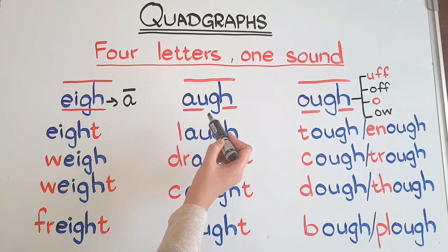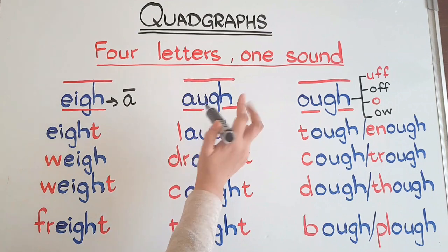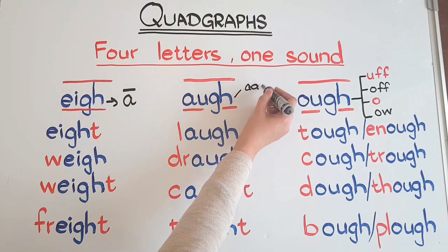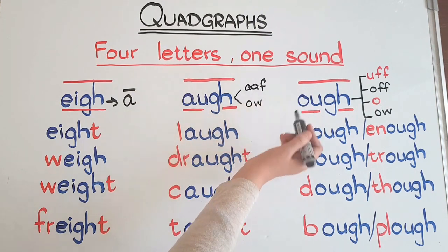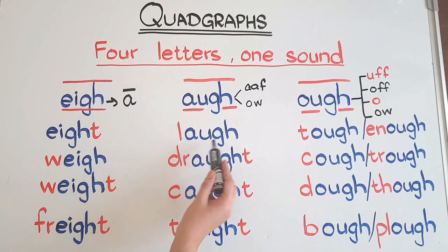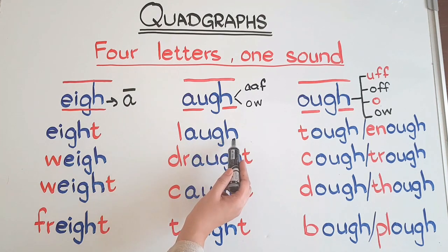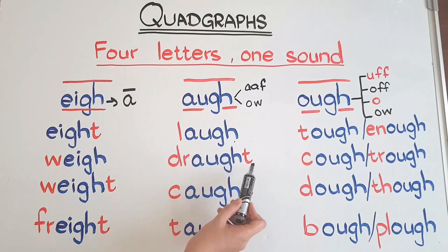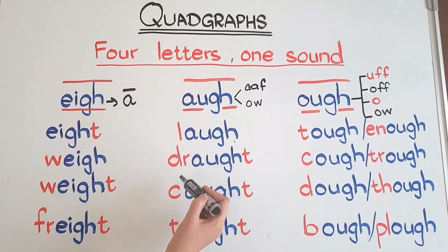The second quadgraph is A-U-G-H. When they are together, they give two sounds: one is 'af' and the other is 'aw'. Let's see examples. Laugh - L-af. Draught - dra-af-t. Draught means a cold breeze or cold wind.